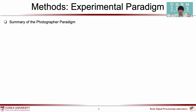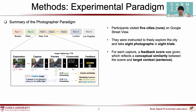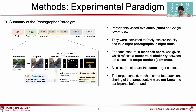We designed a novel real-life paradigm called the photograph-per-paradigm. Participants visit 5 cities in 5 runs on Google Street View. They can fully explore the city following streets and capture 8 photographs in 8 trials. For each photo, a feedback score is given, reflecting the conceptual similarity between the photo and target context. Interestingly, we set the same caption target for all series, and this was not instructed to the participant, making the overall learning task quite difficult.